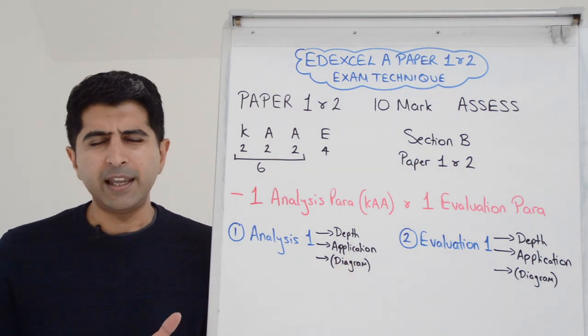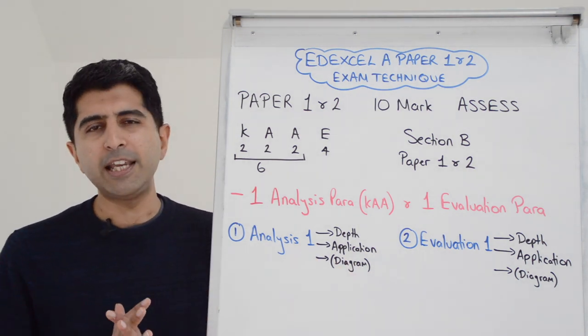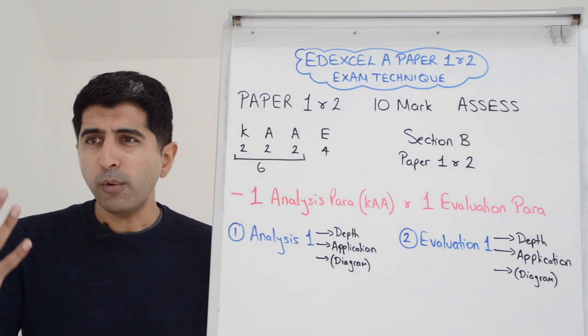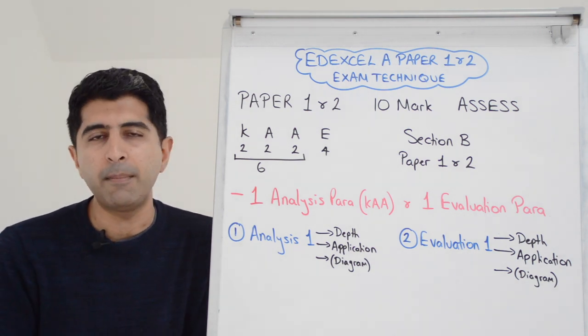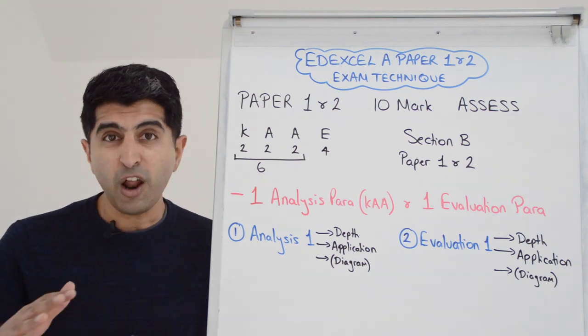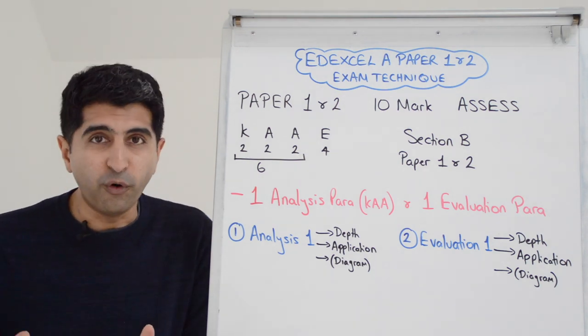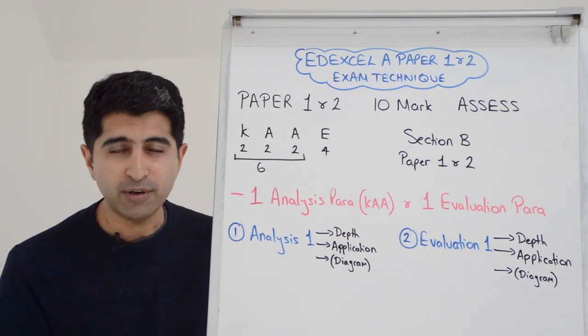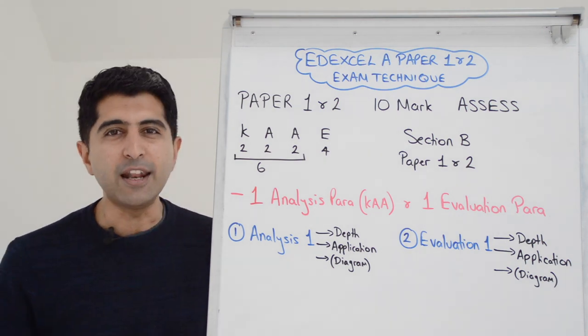And then we're always thinking diagram, right? Anytime you're writing an economics essay, you're writing a paragraph, we're always thinking, could there be a diagram that I could draw to illustrate the point I'm writing? Sometimes the answer is no, in which case, don't worry about it. Don't force a diagram if it's not naturally relevant, if it doesn't naturally illustrate what you're writing.